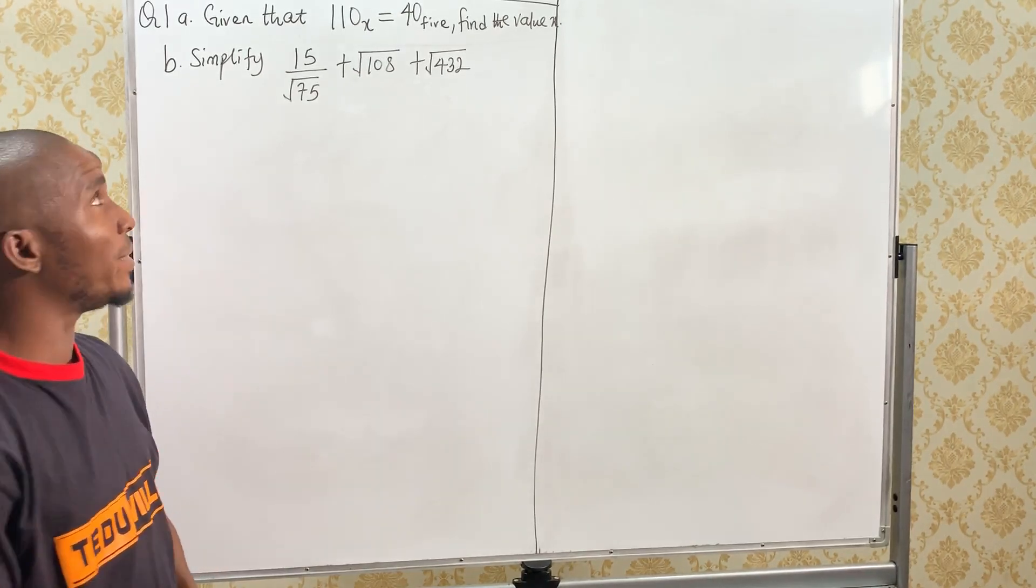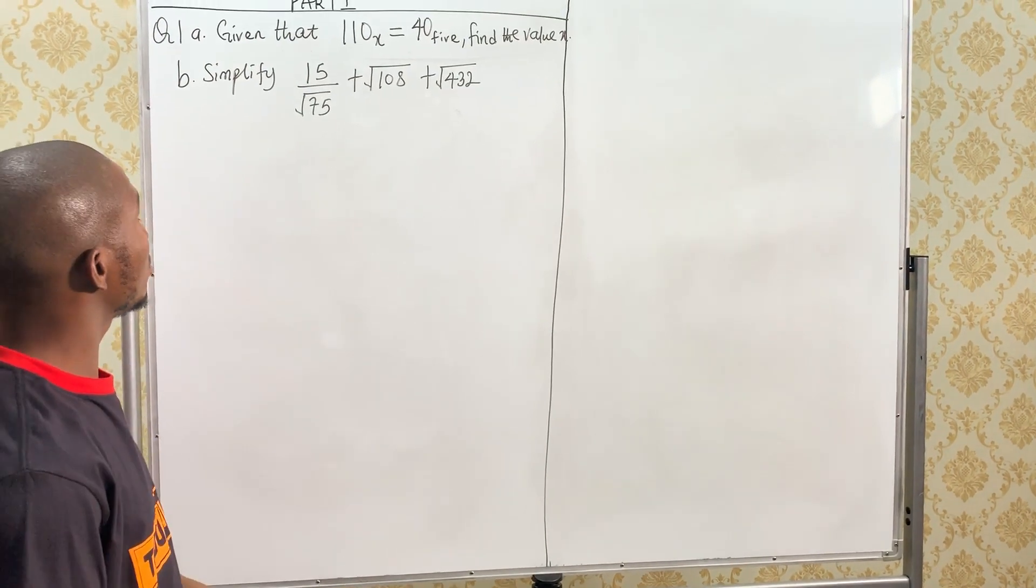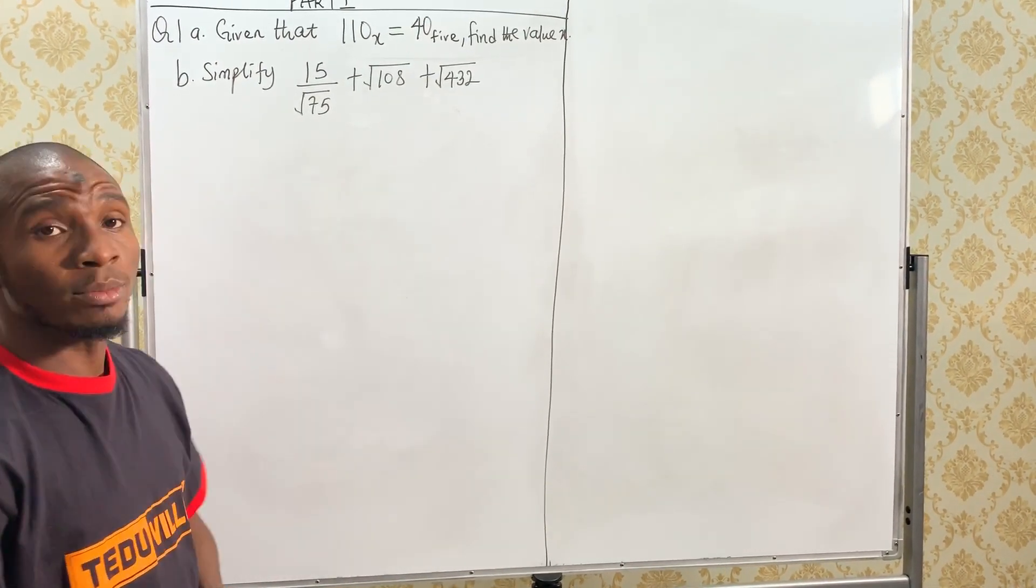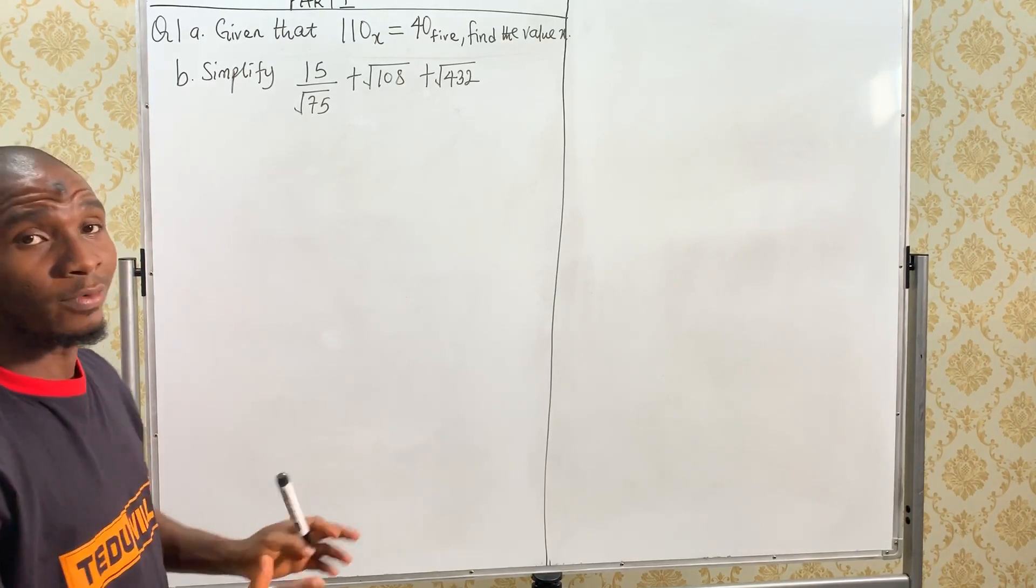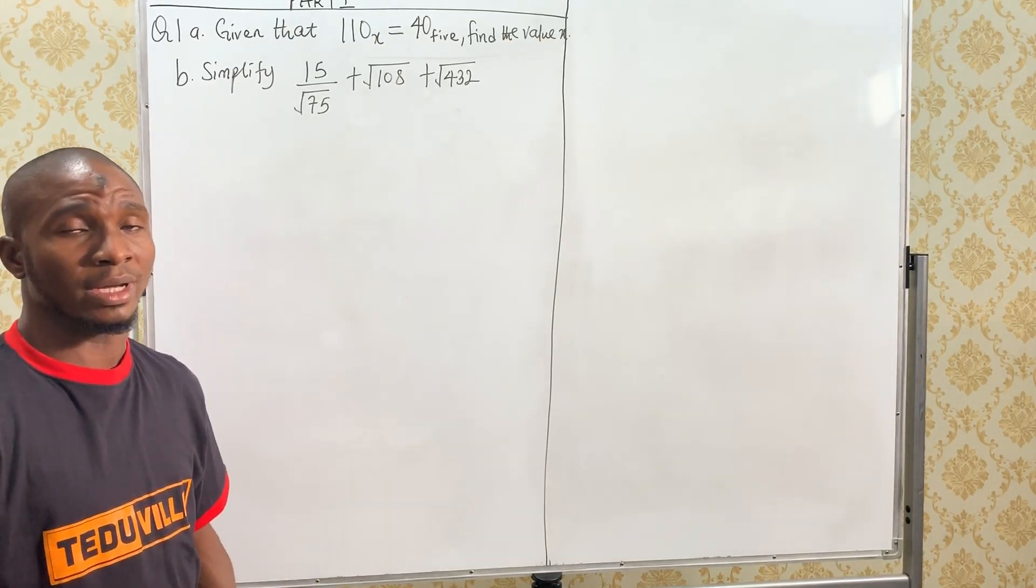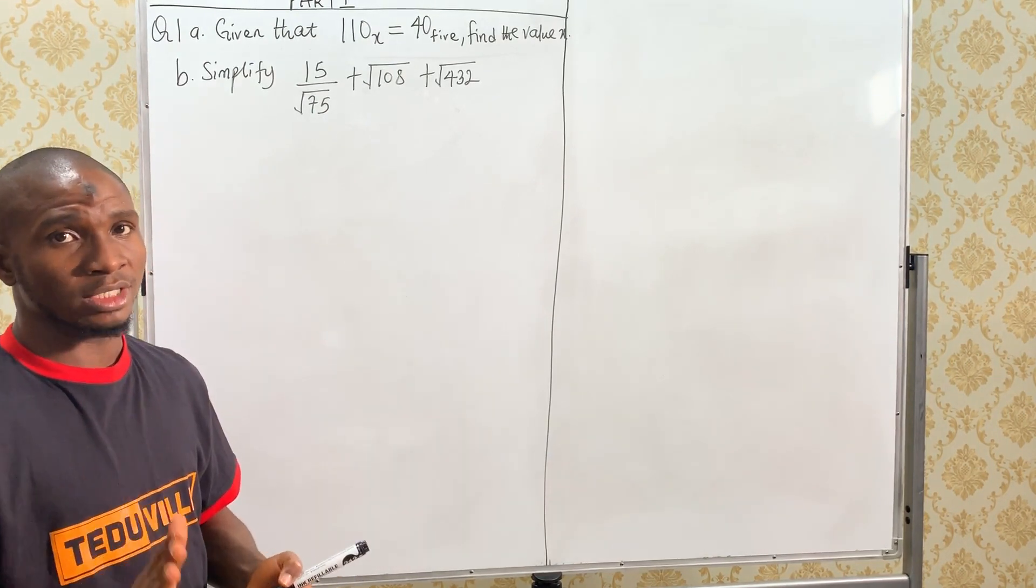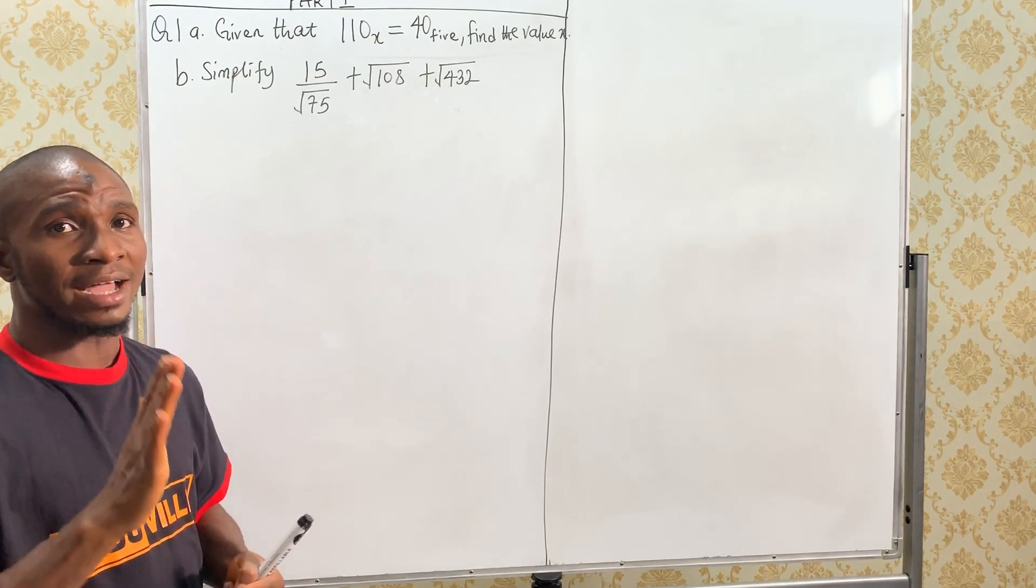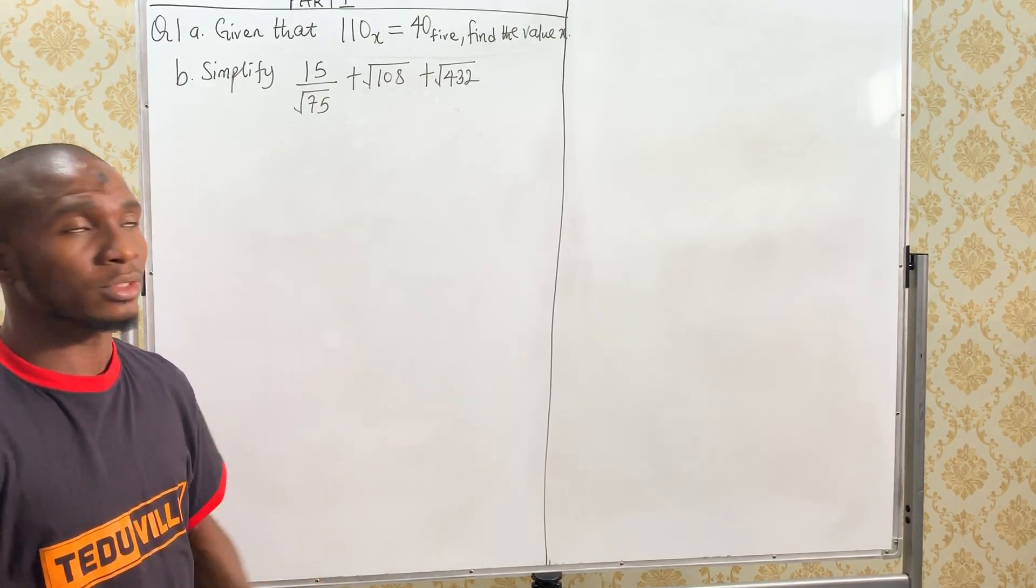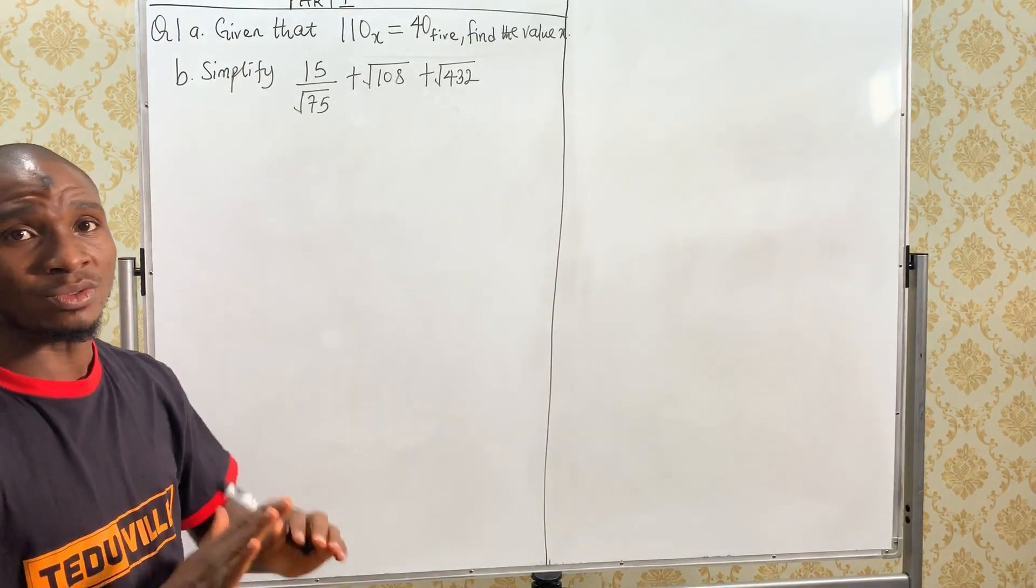Now, we want to look at the theory part of our 2019 question. We'll be starting from question number 1, question number 1A. For the first part, we have two parts in the theory part. We have part 1, which is the first five compulsory questions, and we have part 2, where we'll be asked to pick five out of seven to eight questions. So, we're dealing with part 1. This part 1 is actually compulsory.